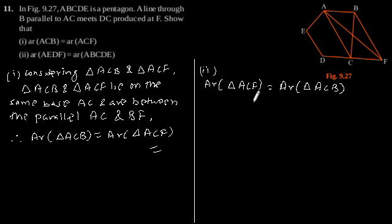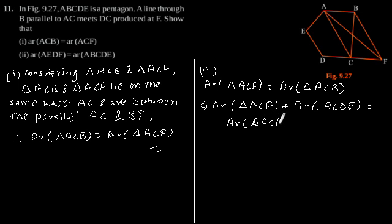Now adding area of ACDE to both sides, we will get area of triangle ACF plus area of quadrilateral ACDE is equal to area of triangle ACB plus area of quadrilateral ACDE.